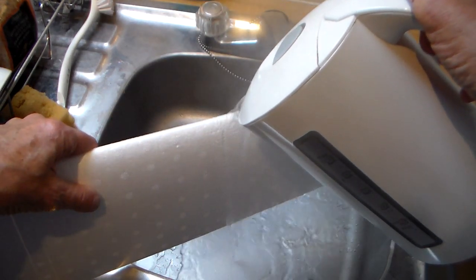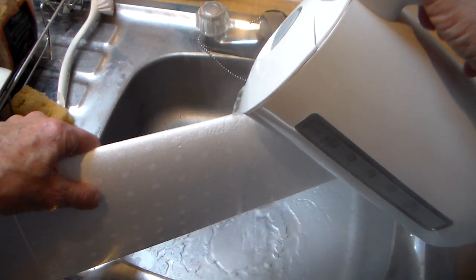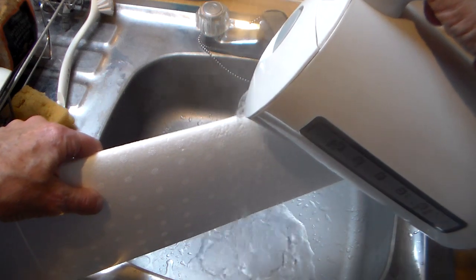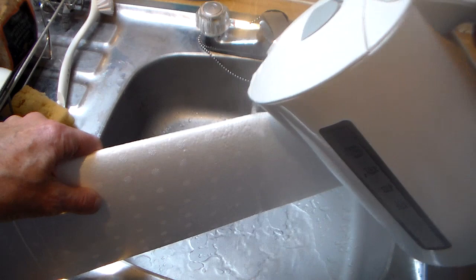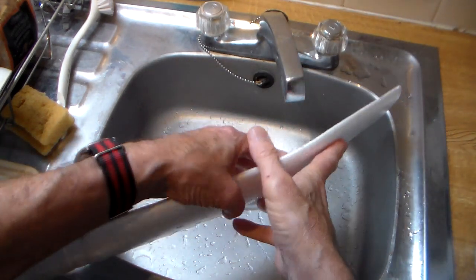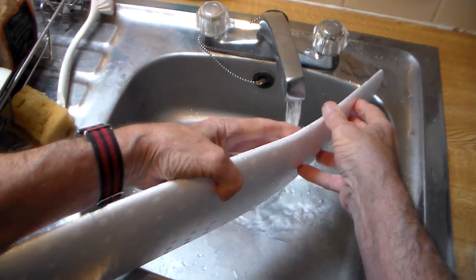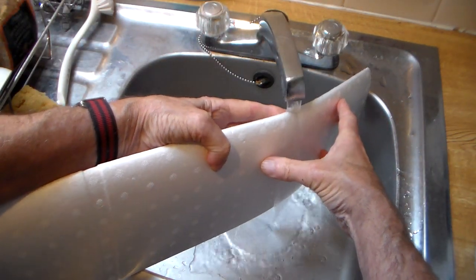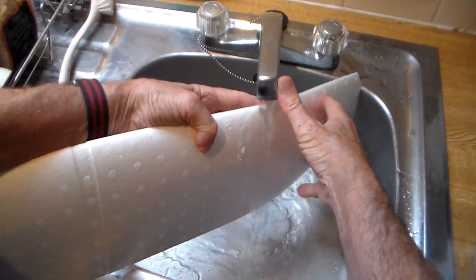Obviously the thickest part is going to be the hardest part to bend. Nice slow trickle actually - I think I did it too fast the first time. Straighten it up a bit and get the cold water going.